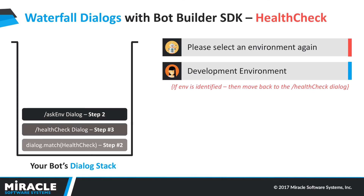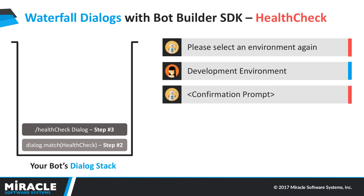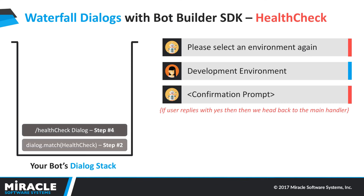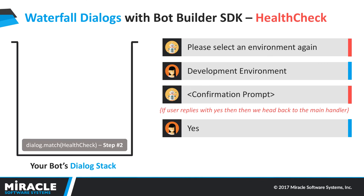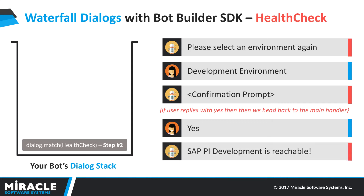Since ENV is identified, it would then move to the health check dialog and ask for a confirmation prompt — whether they would like to go ahead with SAP PI development environment. If the user responds back with yes, it will move back to the main handler through step four of the health check dialog. In case the user responds back with no, it would replace the health check dialog from step one again. Since it is yes, it moves to dialog.match health check step two, where the SAP PI and development environment variables are validated and used to process the health check request, and the response is sent back to the user.